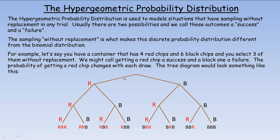The tree diagram would look something like this. We're not going to go through all the probabilities, just enough to explain how they change from trial to trial. There are ten chips altogether — four are red, six are black. The probability of getting a red chip on the first draw would be four out of ten, and the probability of getting a black is six out of ten. Reducing both by dividing by two, we get two-fifths and three-fifths. You should always write probabilities in lowest terms.